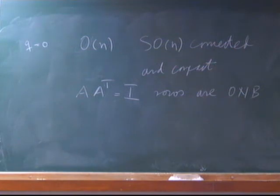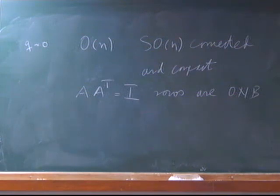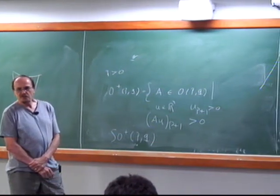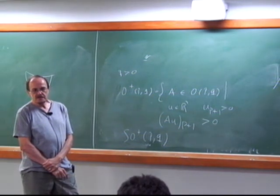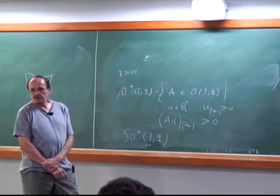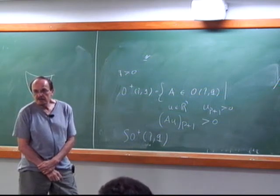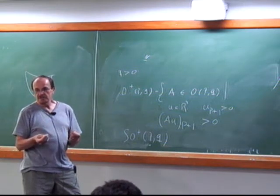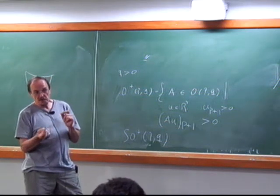There's a real proof and a complex proof. For the complex proof: complexify the space, so the orthogonal matrix becomes unitary, and every unitary matrix can be diagonalized. The diagonal entries are eigenvalues — roots of unity. They come in complex conjugate pairs because the matrix is real. Then find a real basis for each two-dimensional complex eigenspace to interpret it as a rotation.